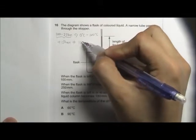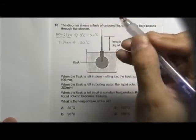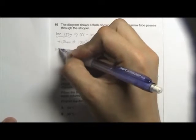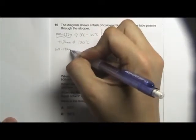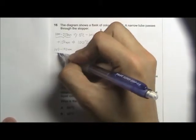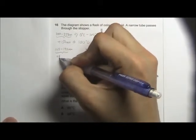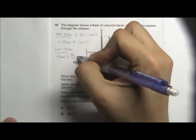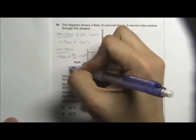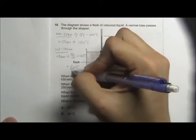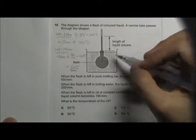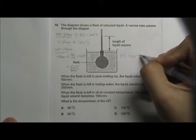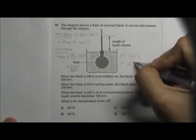When the liquid column is 190, that means from 100 mm to 190 mm it is an increase of 90 mm. So this 90 mm corresponds to 90 over 150 multiplied by 100 degrees Celsius. This gives us 60 degrees Celsius change in temperature. We add this change to the initial temperature which is 0 degrees Celsius and get a final temperature of 60 degrees Celsius, answer A.